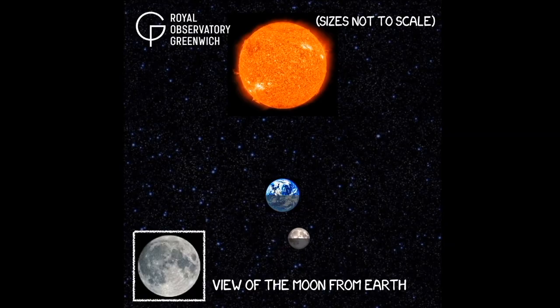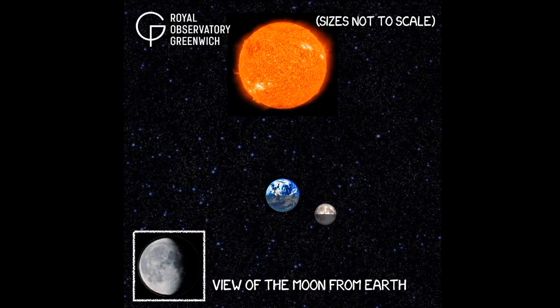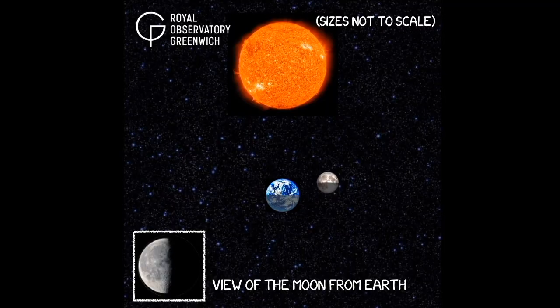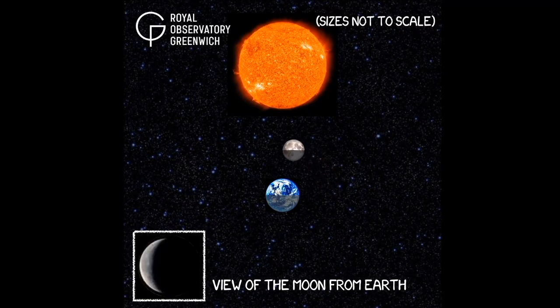As the Moon continues to orbit the Earth, less sunlight will reflect off the Moon and the Moon will look like it's getting smaller. These are waning phases. Eventually, we'll end up back at a New Moon when we cannot see the Moon, and the phases of the Moon will start once again.